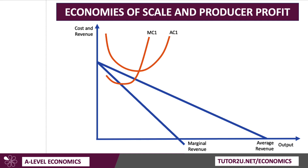So let's take an analysis diagram where initially the costs of production, MC1 and AC1, might be quite high — certainly relative to the demand curve and the marginal revenue curve as shown here. Indeed if production at that scale has a high unit cost, then a profit maximizing firm will make a loss. Where MR meets MC, its output is Q1; draw up to the demand curve to show the price P1, but the unit cost is C1.